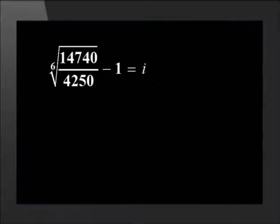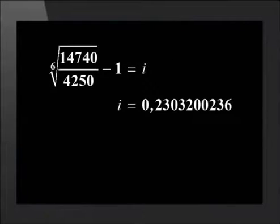By using a calculator we find that i equals 0.23032. To change this to a percentage, we multiply by 100 and round to two decimal places. This gives us an answer of 23.03%. We have now used the compound interest formula to calculate the values for A, P and i.